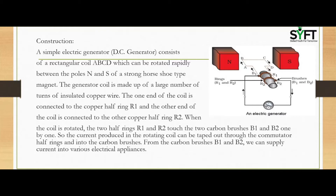From the carbon brushes B1 and B2 we can supply current to various electrical appliances. Here in the image you can see the north pole and the south pole of the strong horseshoe-type magnet, the half rings R1 and R2, and brushes B1 and B2. We can connect appliances and supply current from B1 and B2.